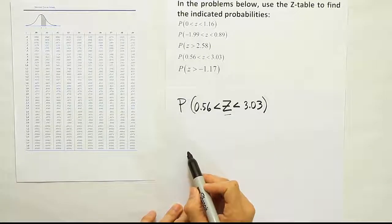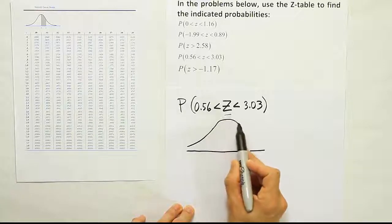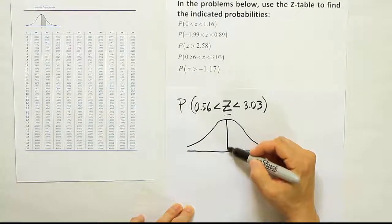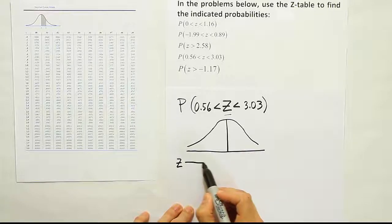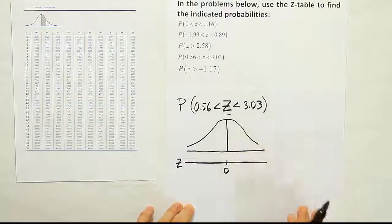So again, we see the Z-score, we think standard normal distribution, draw a bell curve, label a Z-axis, a number line at the bottom here, center at zero, where the mean occurs on the curve.